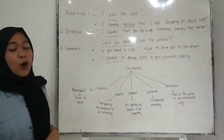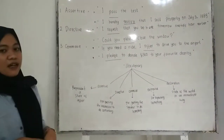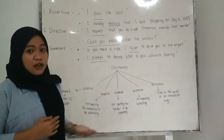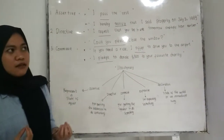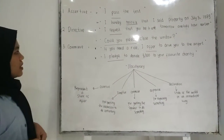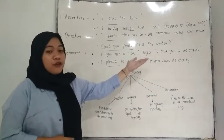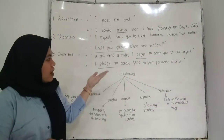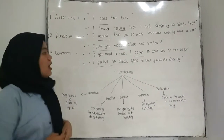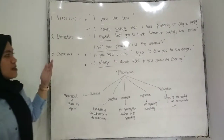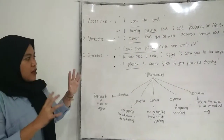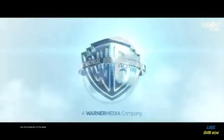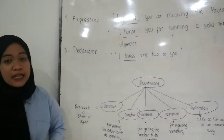The next is commissive. What is commissive? Commissive is the opposite of directive — it is for getting the speaker to do something, such as a promise. For example: 'If you need a ride, I offer to drive you to the airport,' and 'I pledge $500 to your charity.' The words 'offer' and 'I pledge' mean that the speaker commits to doing something for the addressee.